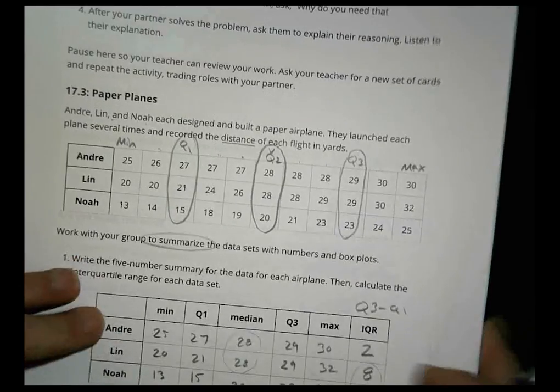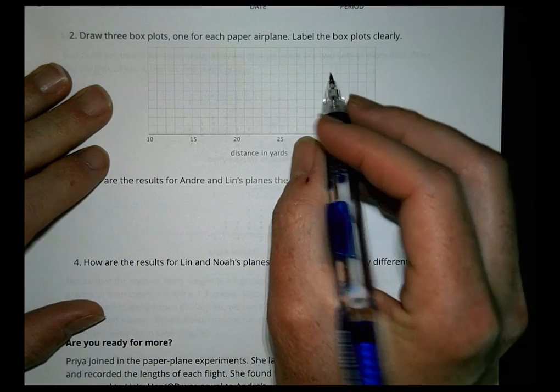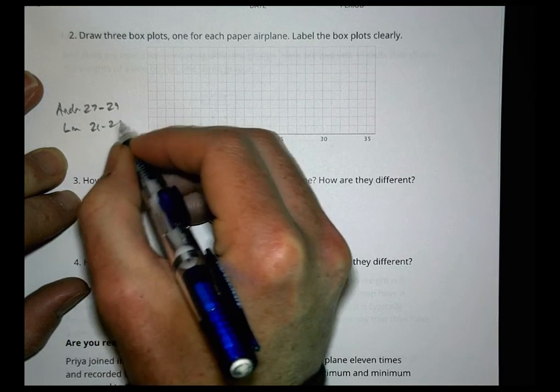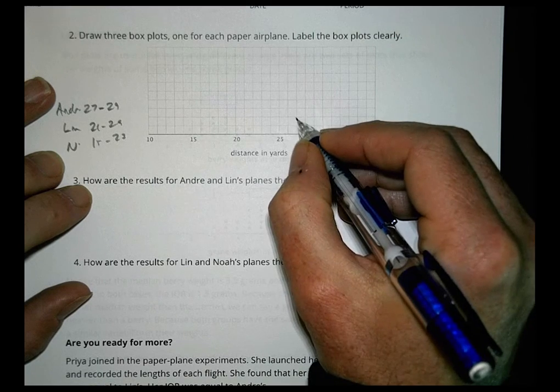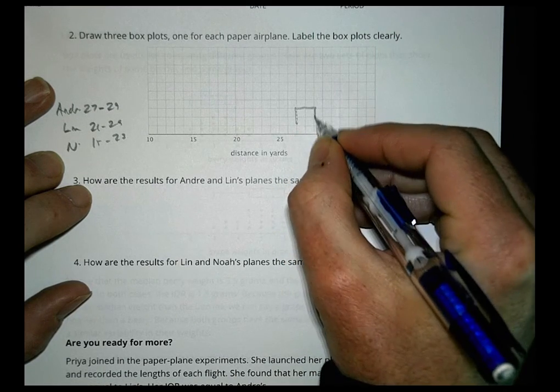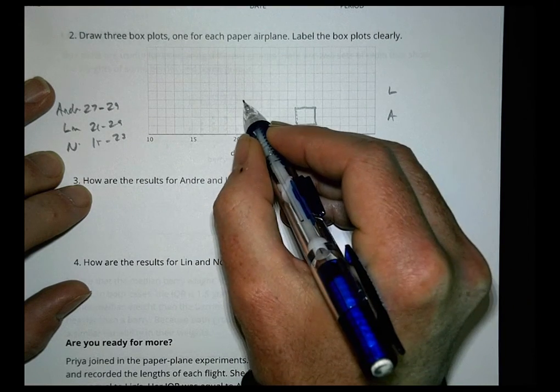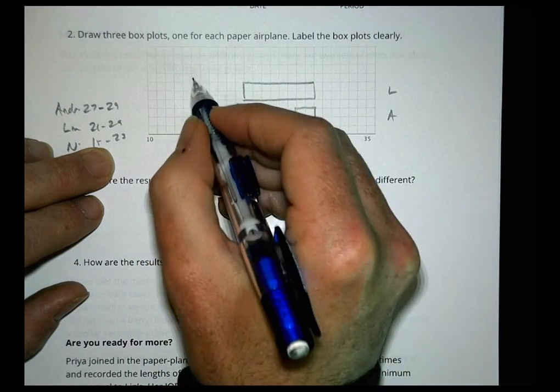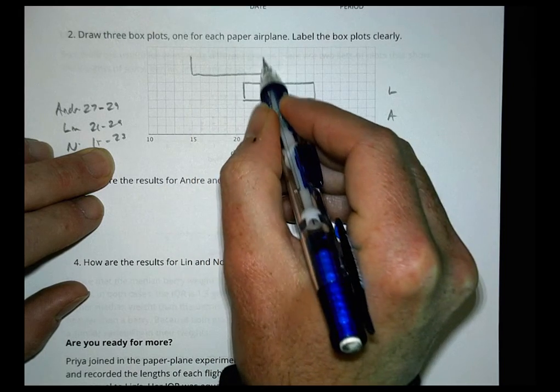So now it wants us to then draw a box plot using these numbers right there. Okay. So I'm going to put this here. And let's draw some box plots. Okay. So for Andre, Andre, the box is going to be from 27 to 29. For Lynn, the box is 21 to 29. And for Noah, the box is 15 to 23. Okay. So let's draw Andre first. 27, which is about here, and going to 29. There's Andre's box. Lynn's box here is 21 to 29. So we'll go to 21 to 29. And Noah's box is 15, which is here, to 23. So those are our boxes there.